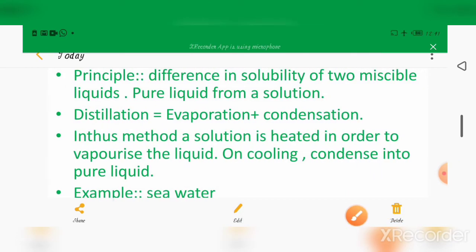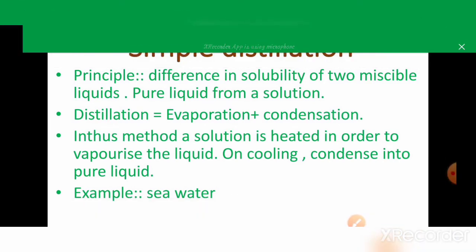The principle of simple distillation is the difference in boiling points of the two miscible liquids. Distillation equals evaporation plus condensation. When a liquid boils, it converts into vapor state, and the vapor condenses to form a liquid.